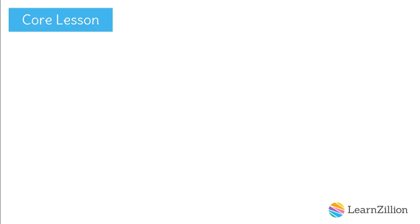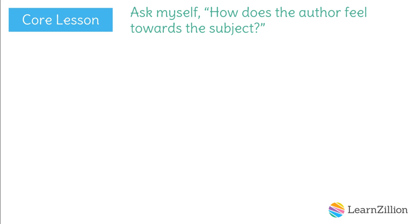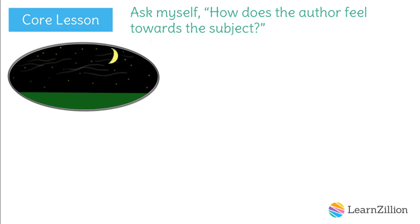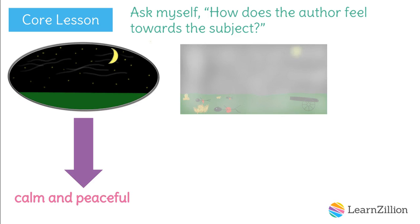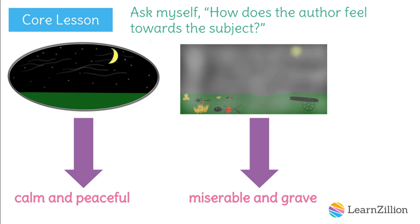Now that I've identified the connotations that the descriptions of the settings convey, I can move on to the final step: asking myself how does the author feel towards the subject? Based on the descriptive language of the night sky, I believe that Whitman feels calm and at peace looking up at the sky. He paints a picture of a setting that I would love to see. On the other hand, the descriptive language used to paint a picture of the battle in the woods is horrible. I think Whitman is just as scared by this setting as I am. He doesn't want to be there, and he doesn't offer any hope of escape. So I think he feels miserable and grave when talking about the battlefield.